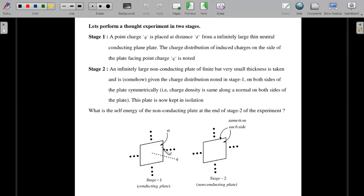In stage two, an infinitely large non-conducting plate of finite but very small thickness is taken, and is somehow given the charge distribution noted in stage one on both sides of the plate symmetrically. So whatever sigma you noted in stage one on one side of the plate, you came to stage two, took a non-conducting plate and gave that sigma on both sides - you just somehow xeroxed or printed that, and the process is not known. That's why it's a thought experiment. Symmetrically means whatever sigma on this side function is there, on the other side the same sigma is being kept. And this plate is in isolation, so no other surrounding charges or influences are there. For this stage two plate, the non-conducting one, you need to calculate self energy at the end of the experiment. So your answers should be in terms of q and d. Sigma is an unknown non-uniform value, so try your answer in q and d. So pause and then play.